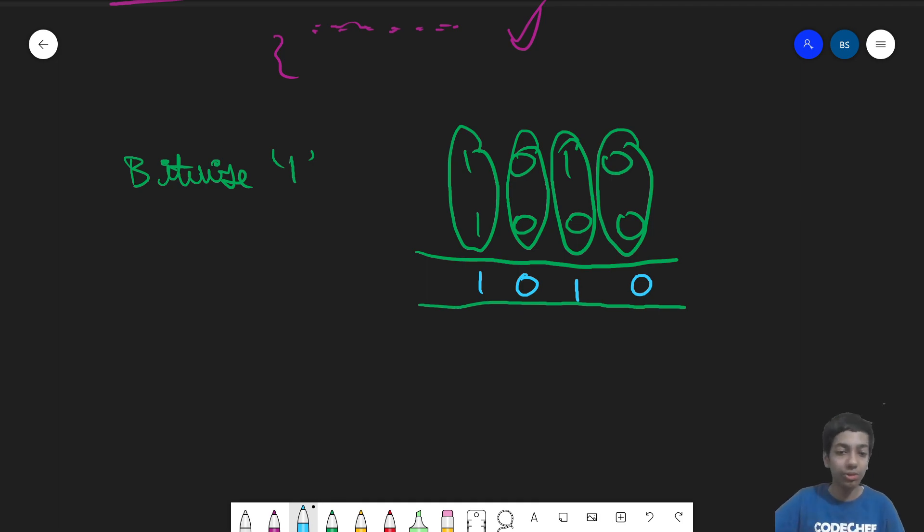And again what the truth table of this looks like is you have zero OR zero, this is zero. Zero OR one is one. One OR zero is one again. And obviously one OR one is one. So again you don't have to memorize this truth table. What does OR mean in English?